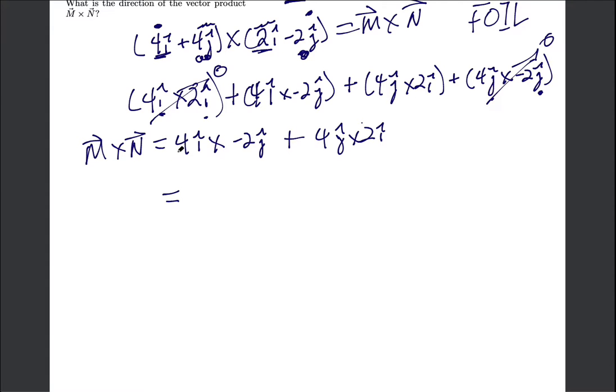I feel like we can make this a little bit clearer. So what I'm going to do is I'm going to group the numbers, the coefficients, and I'm going to group the unit vectors. Since everything's being multiplied, I'm totally allowed to do that, but I can't change the order of my unit vectors.